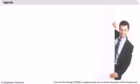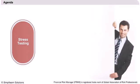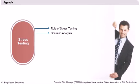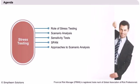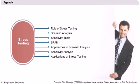Agenda. The main agenda of our discussion will be learning about stress testing and its application in managing financial risk. We will begin by learning about the role of stress testing. We will then learn about scenario analysis and sensitivity tests. A method to calculate margin in a derivatives market, or SPAN, will be studied briefly. We will also learn about various approaches to scenario analysis. Additionally, the differences between stress testing and sensitivity analysis will be highlighted. Finally, we will end the session with a brief discussion on the applications of stress testing.